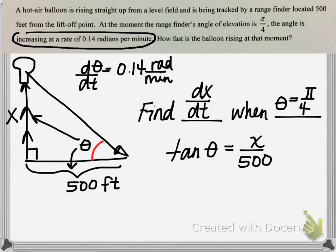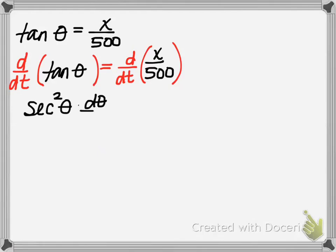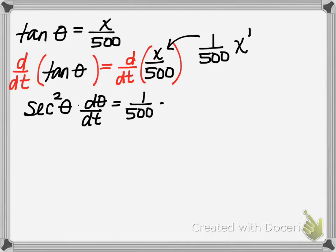Now we take the derivative of both sides with respect to time, using implicit differentiation. The derivative of tan(θ) is sec²(θ) · dθ/dt by the chain rule. On the right-hand side, x/500 is the same as (1/500)·x, so the derivative is (1/500) · dx/dt.